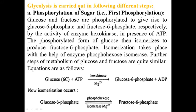Glycolysis is carried out in the following different steps. First, phosphorylation of sugar — glucose and fructose are phosphorylated. Glucose plus one molecule of ATP, with the help of the enzyme hexokinase, forms glucose-6-phosphate. Glucose-6-phosphate and fructose-6-phosphate are formed respectively by the activity of the enzyme hexokinase in the presence of ATP.